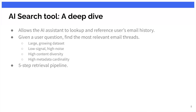Today the AI search tool is what allows the assistant to look up and reference users' email history. You give it a question and its job is to find the most relevant email threads for that question. Unfortunately email data makes this problem much harder. For one thing, email data could be very large — depending on how long you've had that email account, you might have tens of thousands of emails, and it's a growing data set. It's also very low-signal, high-noise: about two-thirds of your email are promotions, updates, and other kinds of spam.